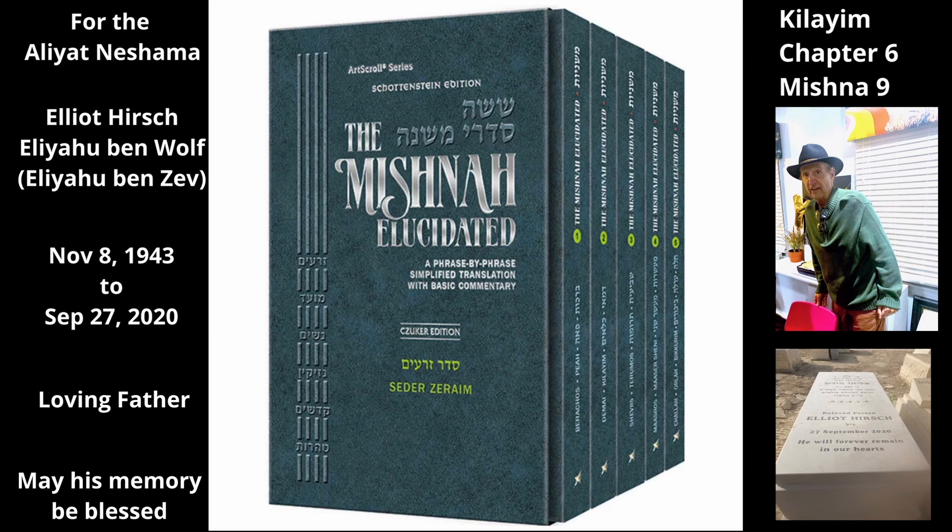The Mishnah discusses the law of a branch of a grapevine that is supported by another tree. If a person stretches the branch of a grapevine from one tree to another tree, it is prohibited to plant other species beneath the branch. If the vine branch was not long enough to reach from the first tree to the second, and he extended it with a rope or reed grass, it is permissible to plant other species beneath the extension.